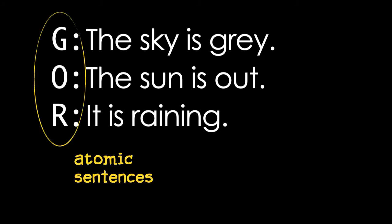The sentence letters are called atomic sentences, using the original sense of atomic to mean unbreakable or having no further structure. In English, these three sentences are related to each other because they're all about weather. In SL though, G, O, and R don't have anything to do with each other. They just have truth values.